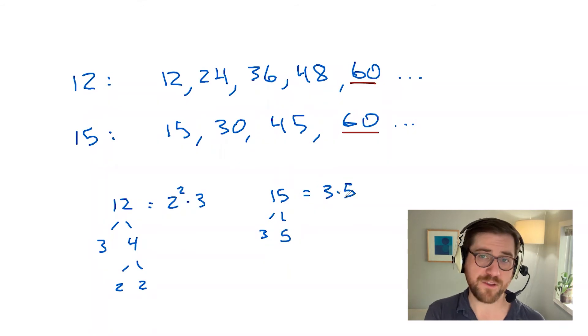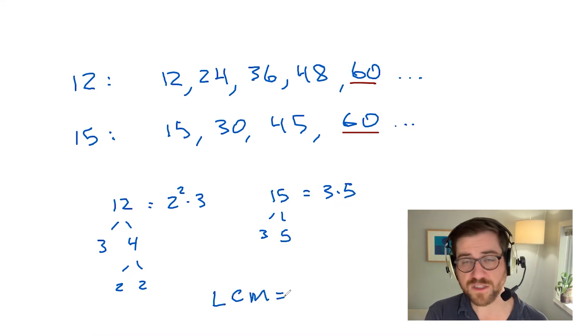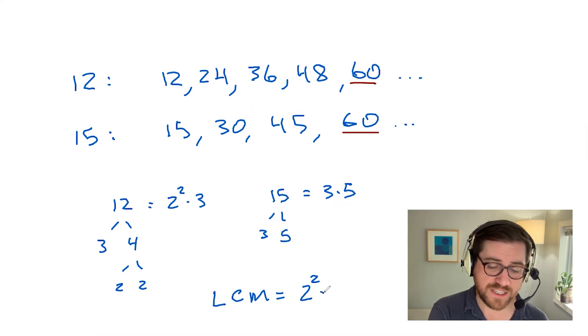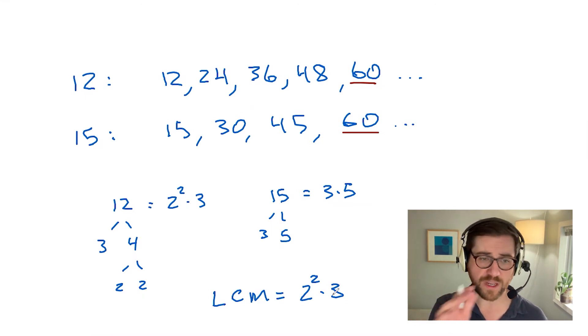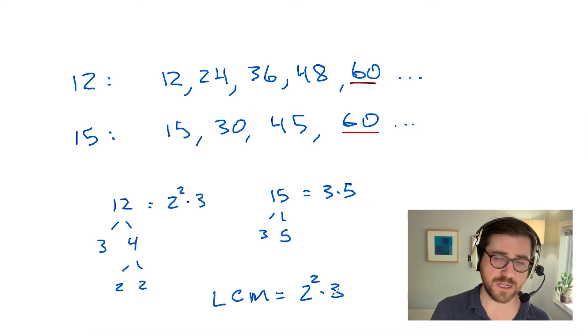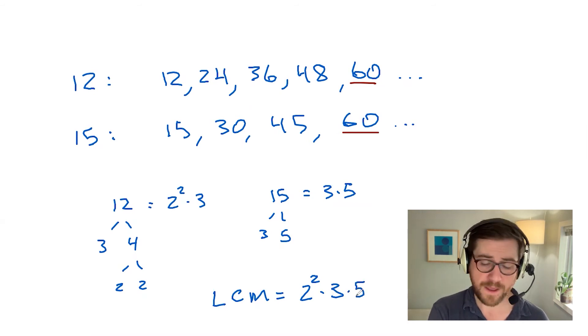So I could also get to this least common multiple being 60 by just thinking about what primes I would need to cover both of these. So since the 12 has two copies of 2, I need two copies of 2 in the least common multiple. I've got a 3 in the 12 and a 3 in the 15, but I actually only need a single 3 in the least common multiple because I just see a single 3 in each of these two numbers. So as long as I've got to throw in that one 3, 12 is going to be covered, 15 is going to be covered. The one final piece I need to fully cover 15 is a 5 as well. And you can check that this also works out to 60.